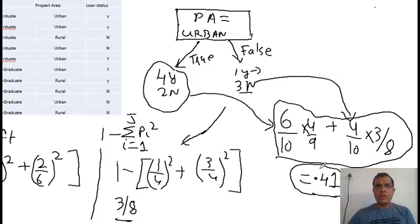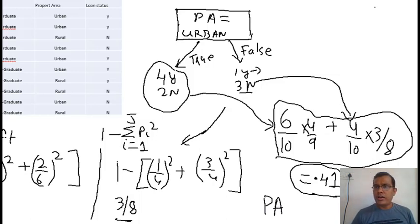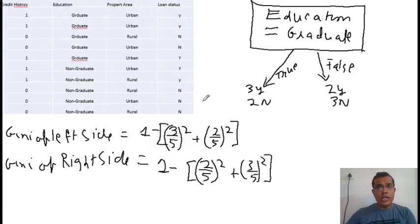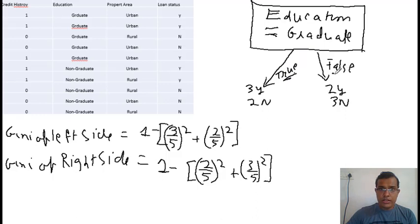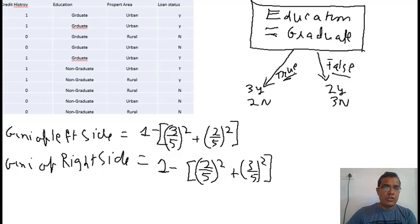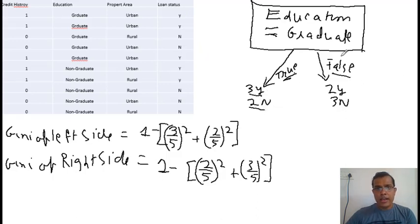Let's quickly calculate for education. I have already drawn the diagram. If education equals graduate and it's true, I move to the left side; if false, to the right side. On the left side there are five records for graduate, out of which three have loan approved (Y) and two do not (N). If education is non-graduate, again five records — but three N and two Y.